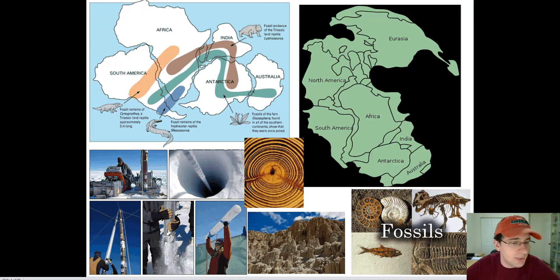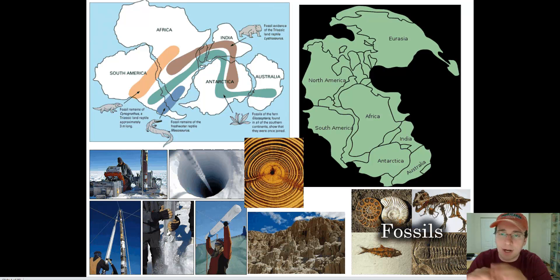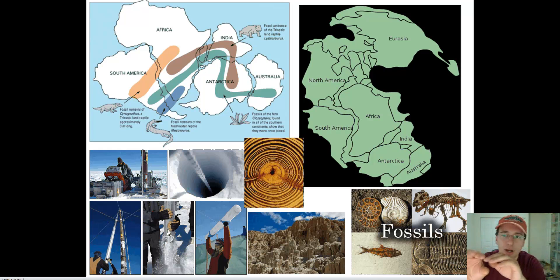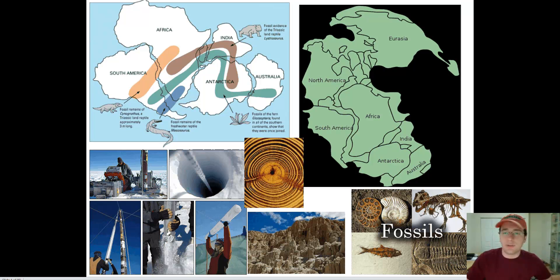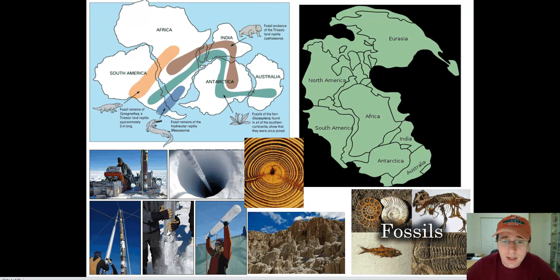Lastly, there's the idea of rock formations. In several cases, a mountain range starts in one continent, and if you put the continents back together, the mountain range continues in the opposite continent — as if one mountain range was split in half as the continents drifted apart. This is also true of rock properties at the edges of continents, which match those at the edge of another. For example, the edge of South America seems to match the edge of Africa.